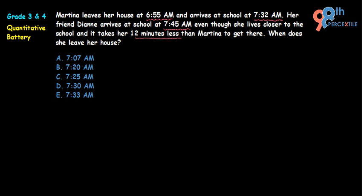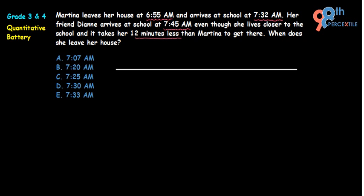We have two different people in the question — Martina and Deanne. What we should do first is find out how much time it actually takes Martina to reach school. We can create a small timeline to help understand the total time taken.